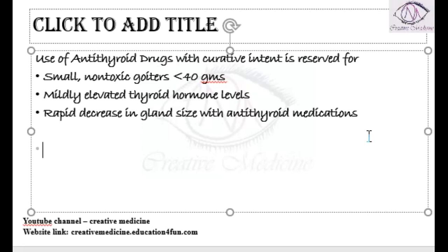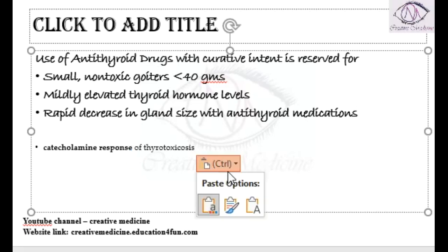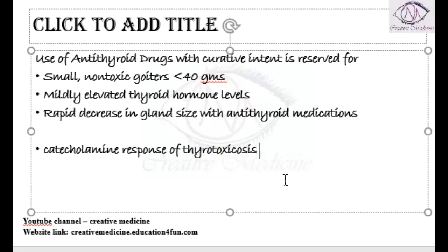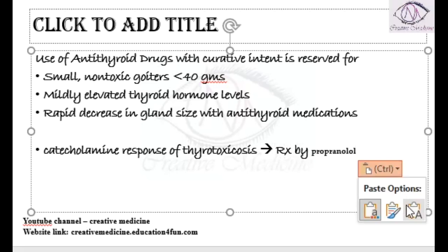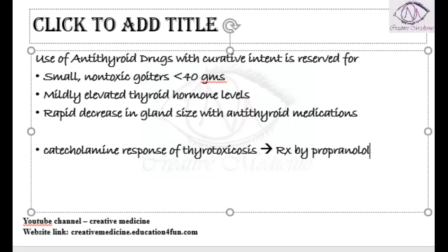If the patient has catecholamine features of thyrotoxicosis, these are treated by a non-specific beta blocker. Propranolol can be given for treatment of this catecholamine response.